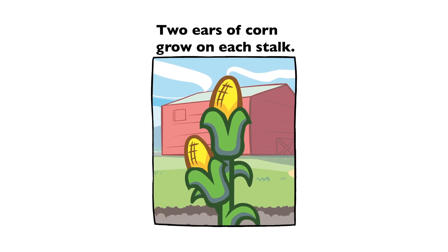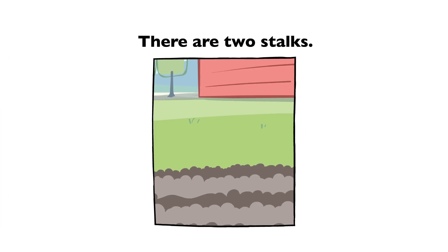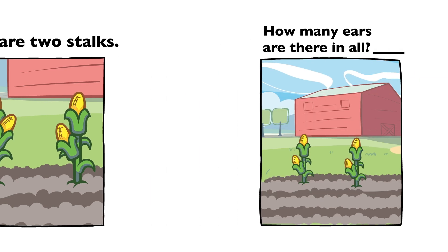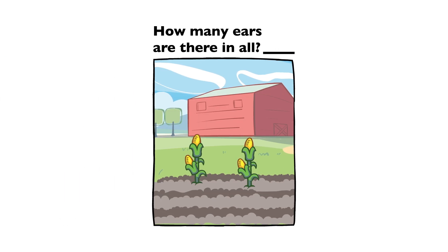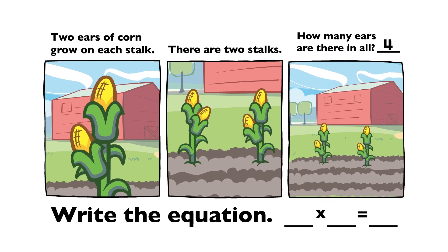2 ears of corn grow on each stalk. There are two stalks. How many ears are there in all? 4. 2 times 2 equals 4.